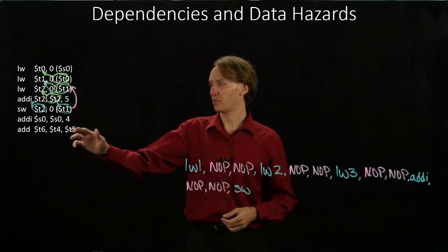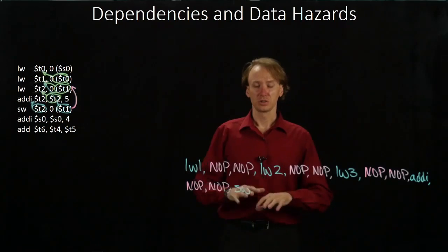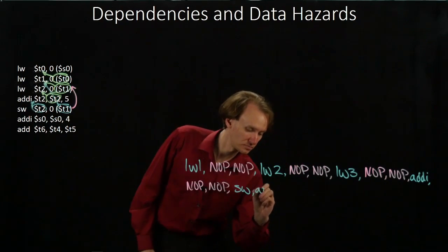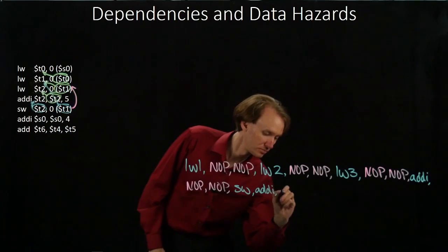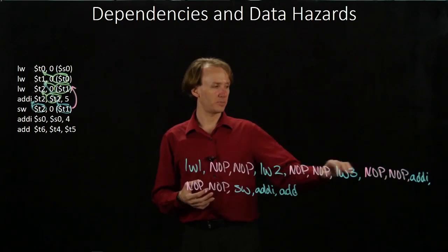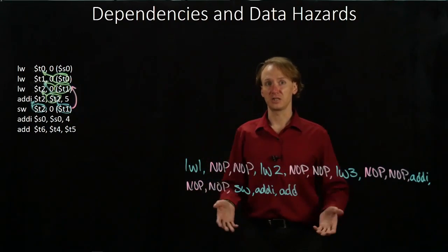My second add immediate instruction and my add instruction don't have any dependencies on the previous code. So I can just run those two instructions immediately. So this is how I'd have to add no-op instructions to resolve the dependencies in our five-stage pipeline.